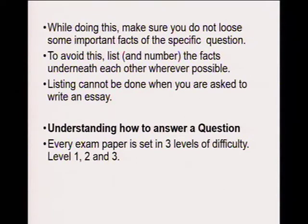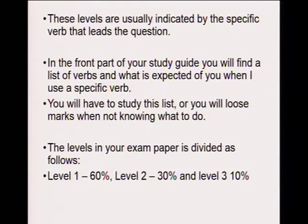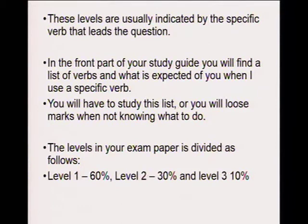Understanding how to answer a question: every exam paper is set in three levels of difficulty — Level 1, 2, and 3. These levels are usually indicated by the specific verb that leads the question. In the front part of your study guide or your Kindle, you will find a list of verbs and an explanation of what is expected when I use each specific verb. You will have to study this list, or you will lose marks when not knowing what to do. The levels in your exam paper are divided as follows: Level 1 counts 60% of the paper, Level 2 counts 30% of the paper, and Level 3 counts 10% of the paper.